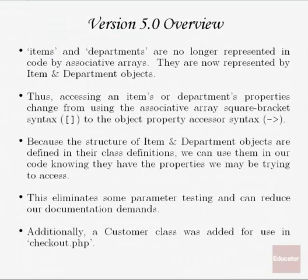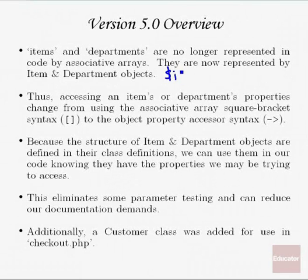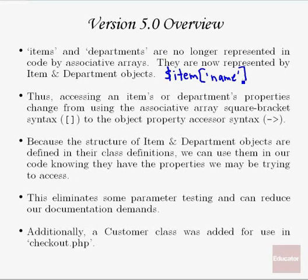Basically what we're doing is taking these items and departments that we had in our application. Before, they weren't official PHP objects — we modeled them as an associative array. For example, we'd pass around an item associative array containing keys like 'name' to represent the name of a particular item. Now we're going to officially create that item and department data type by creating item and department objects.